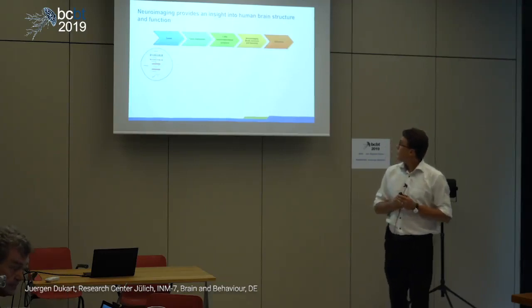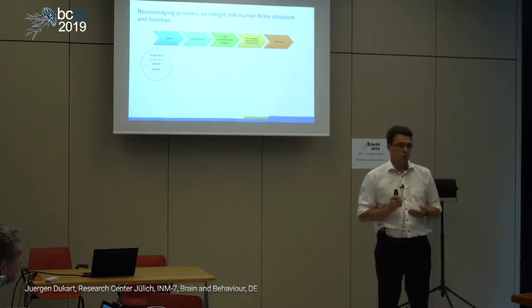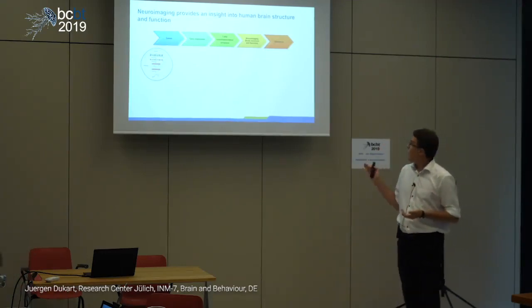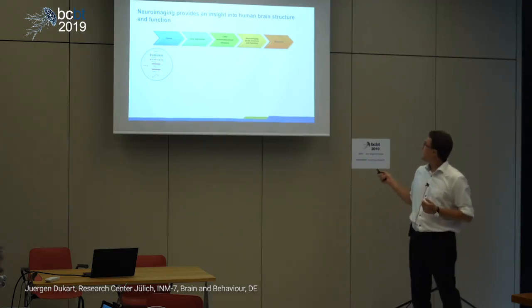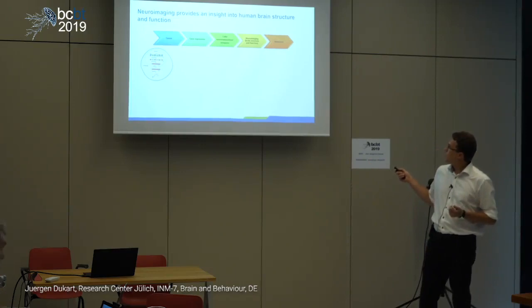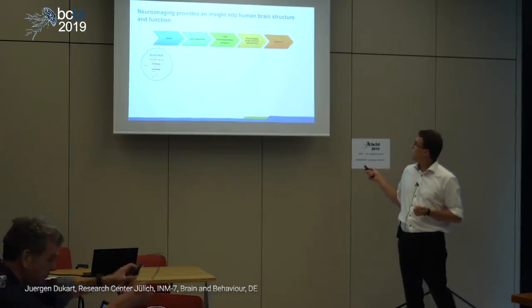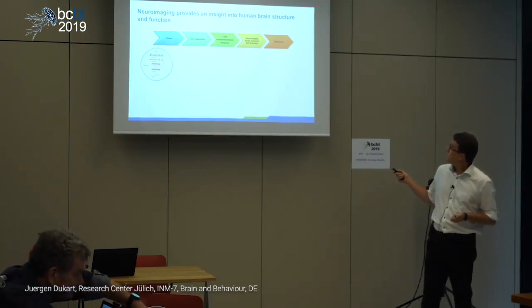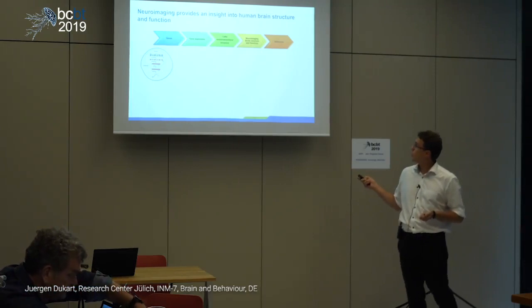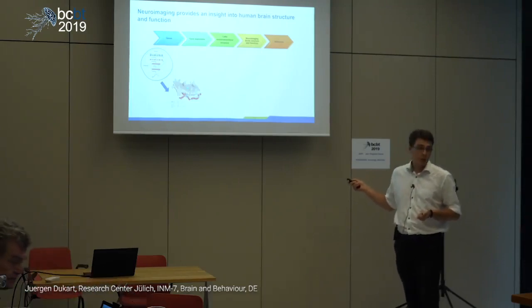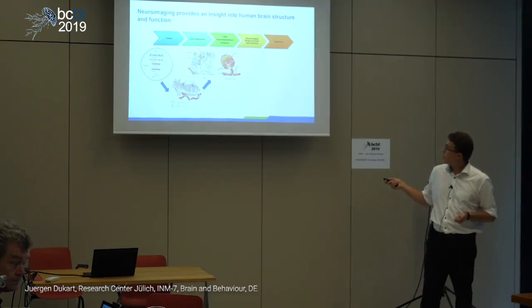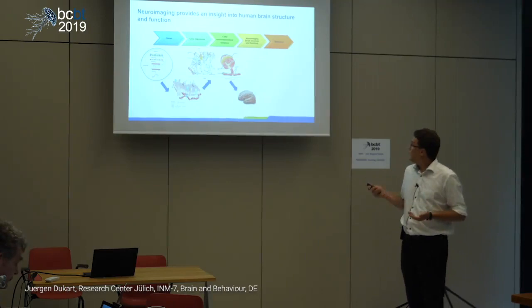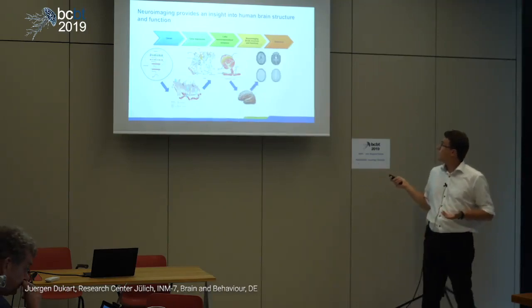Let me first start from a biology point of view — where we are and where we are not with neuroimaging. What we always tend to forget is that in neuroimaging, we talk about brain structure and function. We are actually on the pathway starting from genes. Genes have to be transcribed into specific tissue types, forming proteins for different cell types like neurons, glial cells, and so on. This gives us, for example, brain tissue.